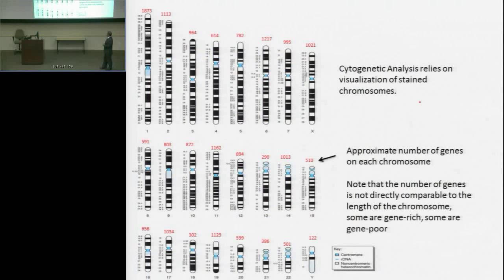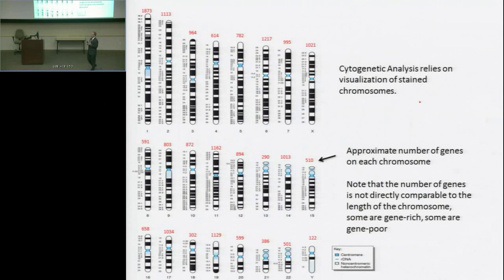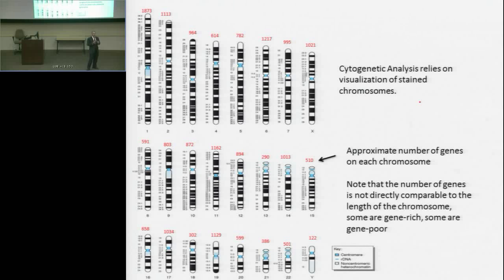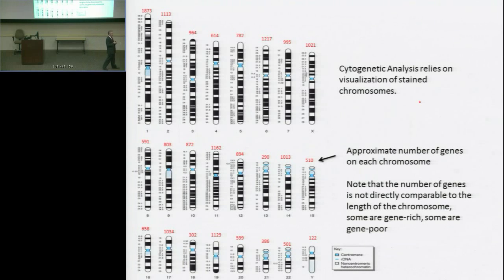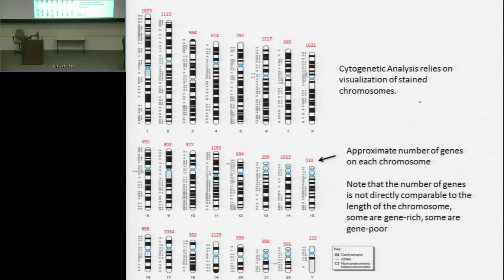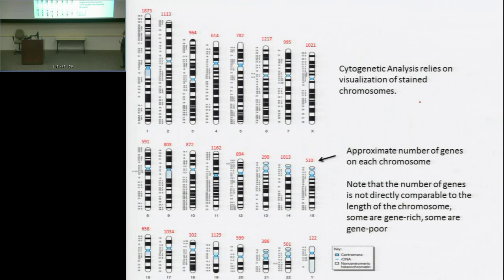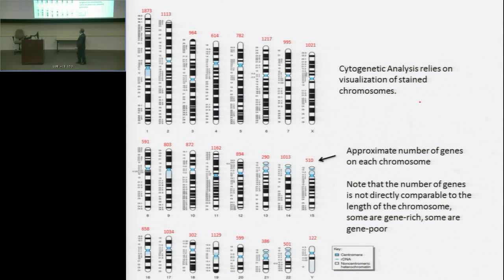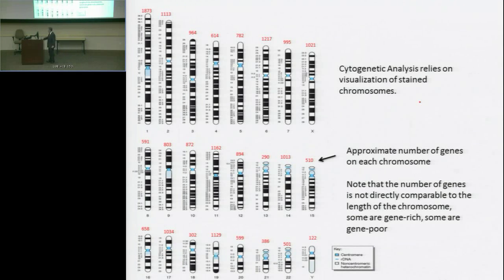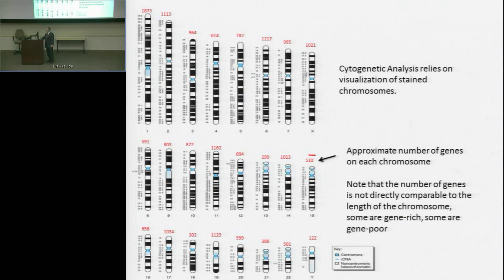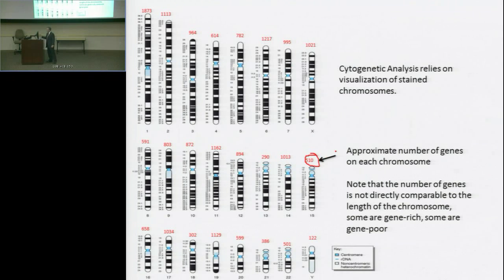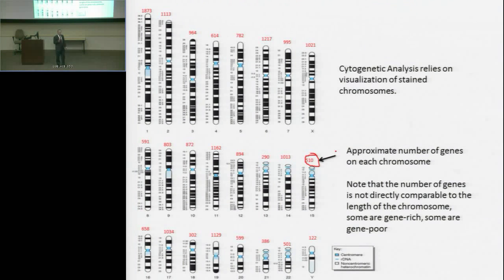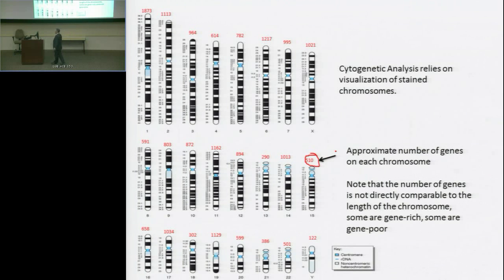Now, these numbers are probably a little bit out of date, but they give the message that I really want to get across to you, which is that genes are not equally distributed across chromosomes in terms of numbers. So if you look here, on the top of each of these chromosomes, I put a number, which is the approximate number of genes on that chromosome. Some chromosomes are defined as being gene-rich, others being gene-poor.